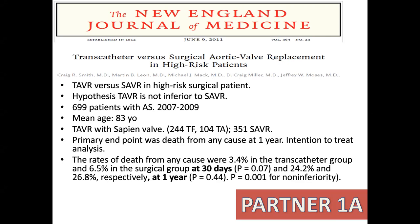They used the first-generation valve and randomized patients to SAVR and TAVR. 100 patients had alternative access — at that time it was transapical and direct aortic. The primary endpoint was death from any cause at one year, and it was an intention-to-treat analysis. The rates of death from any cause were 3.4% in the transcatheter group versus 6.5% in the surgical group at 30 days, which was not clinically significant, and 24% versus 26% at one year. Basically, TAVR was found to be non-inferior to SAVR in those high-risk patients.